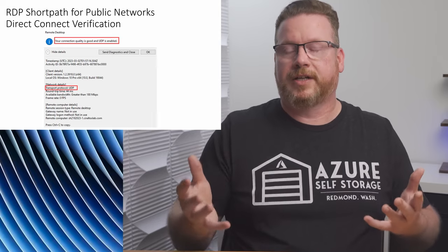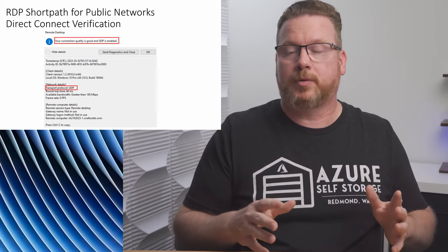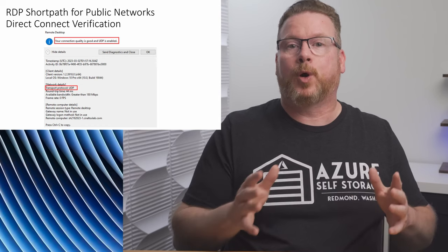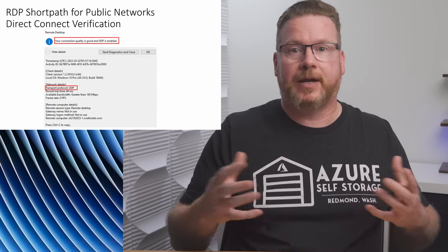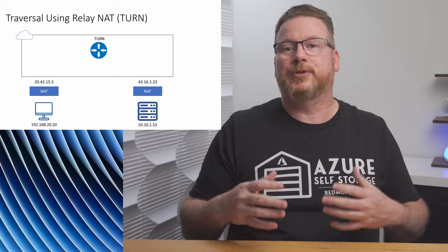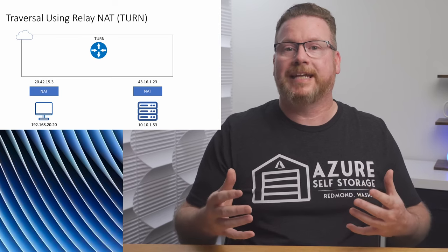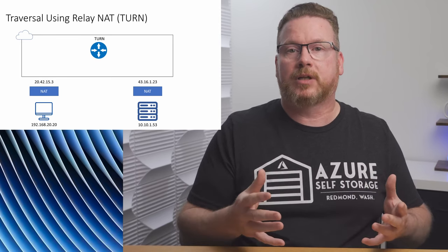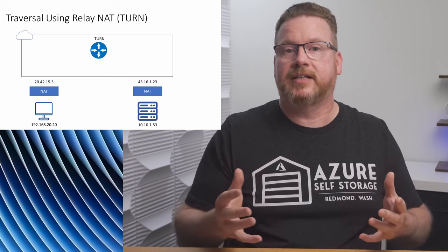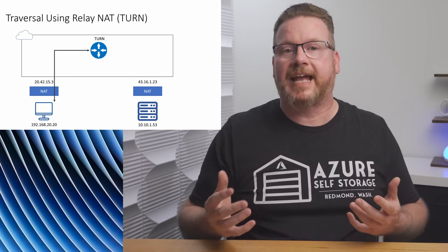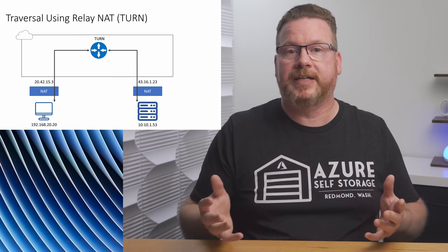So what if this doesn't work in your environment? That's where short path for public networks and the indirect connection comes in. Before we review that, let's review another networking service: Traversal Using Relay NAT, or TURN. TURN is an extension of STUN. TURN is used when two peers want to exchange data but can't communicate directly due to network limitations, such as the STUN port being blocked or the use of symmetric NAT. The TURN service acts as a UDP relay between two peers.